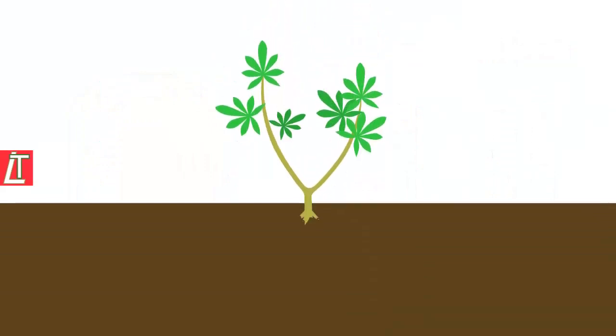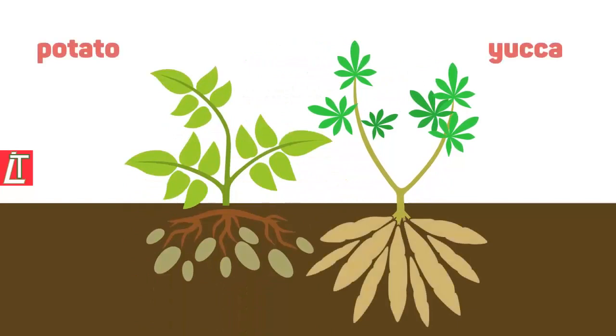Stems are mostly found above the ground but some plants have underground stems. Potatoes and yucas are actually parts of a swollen underground stem.